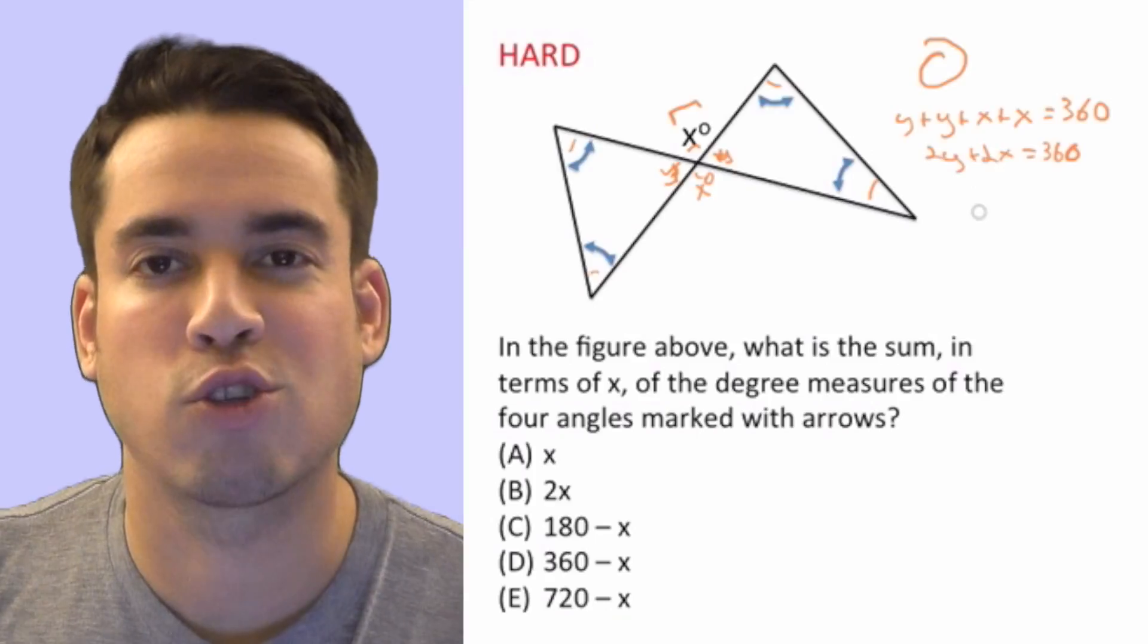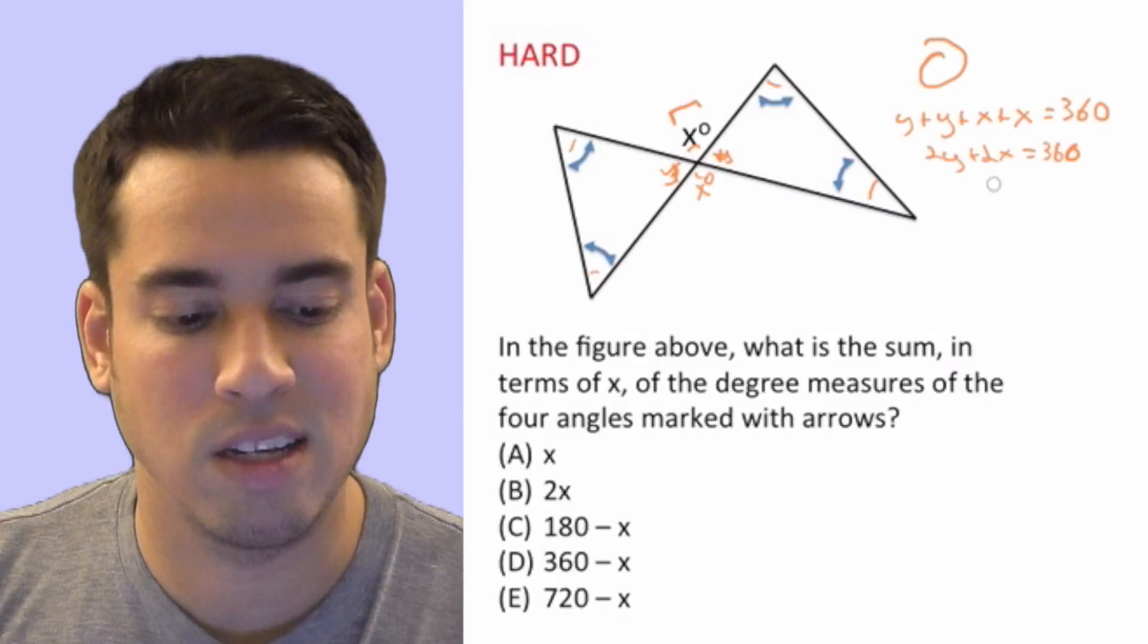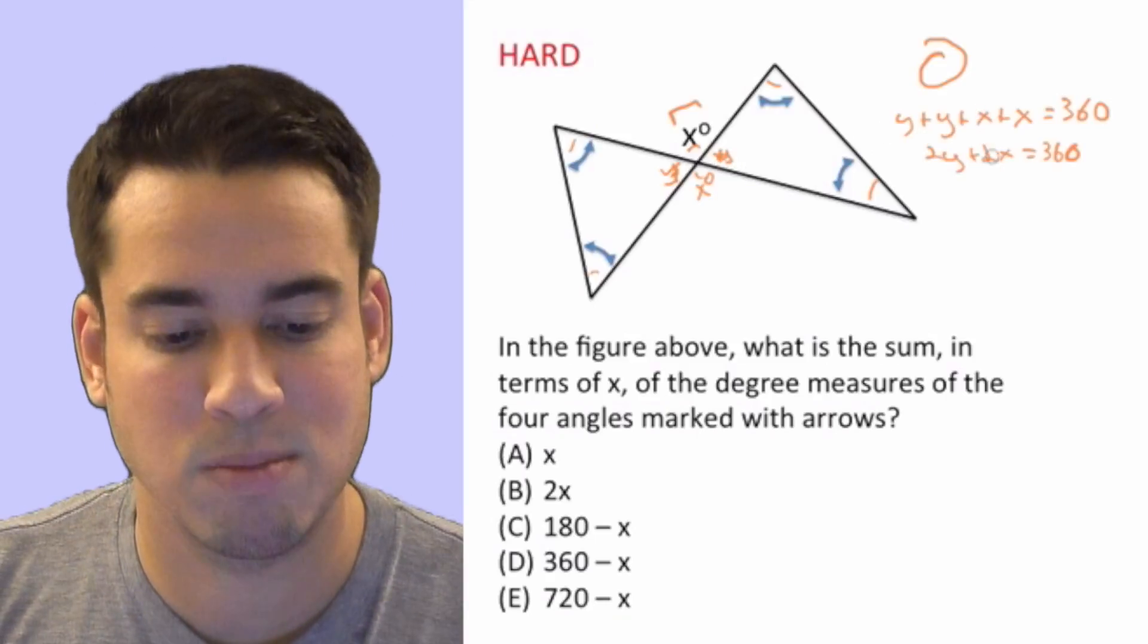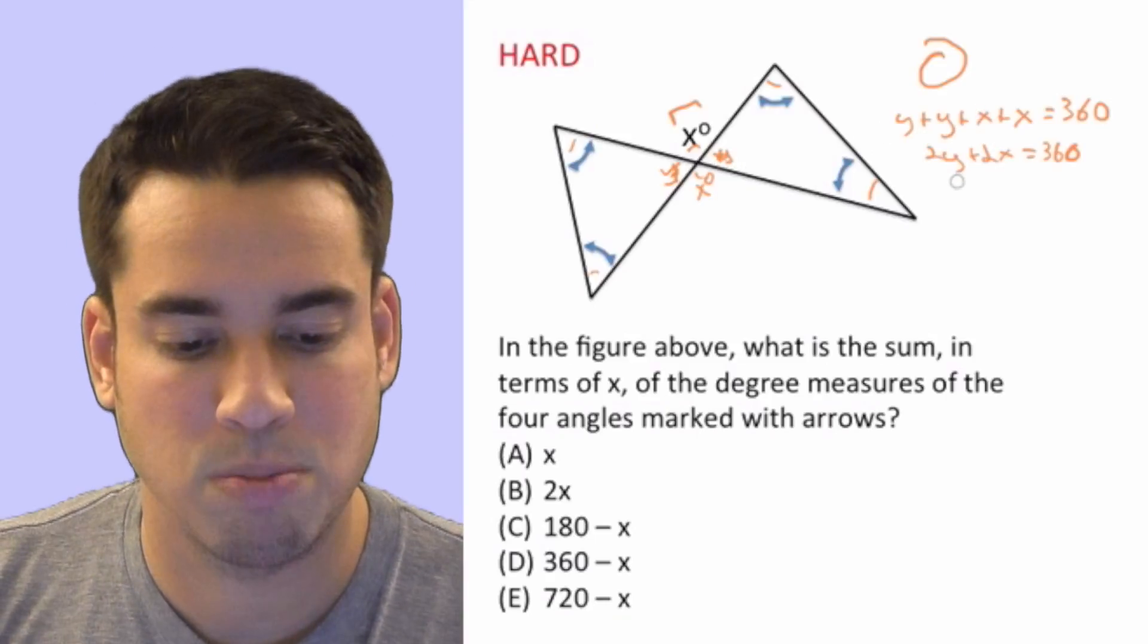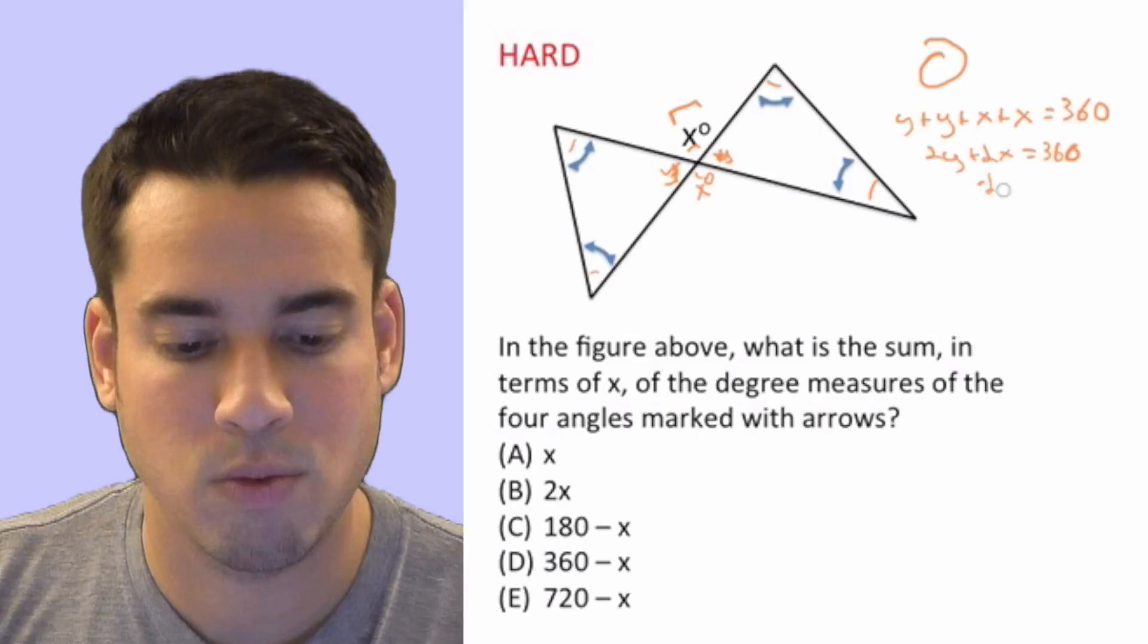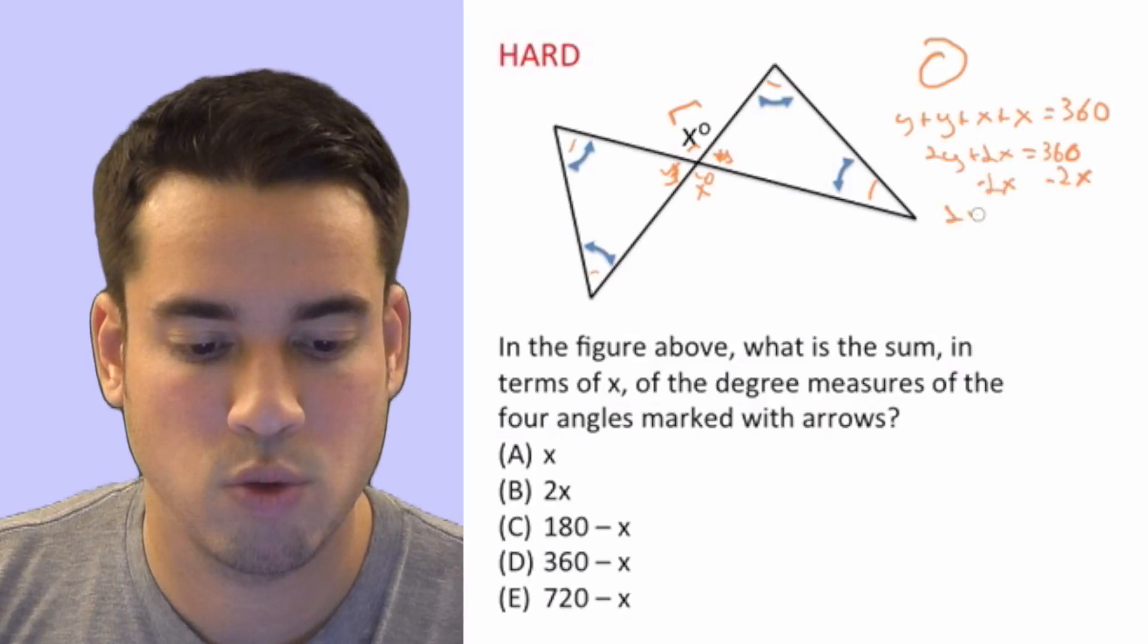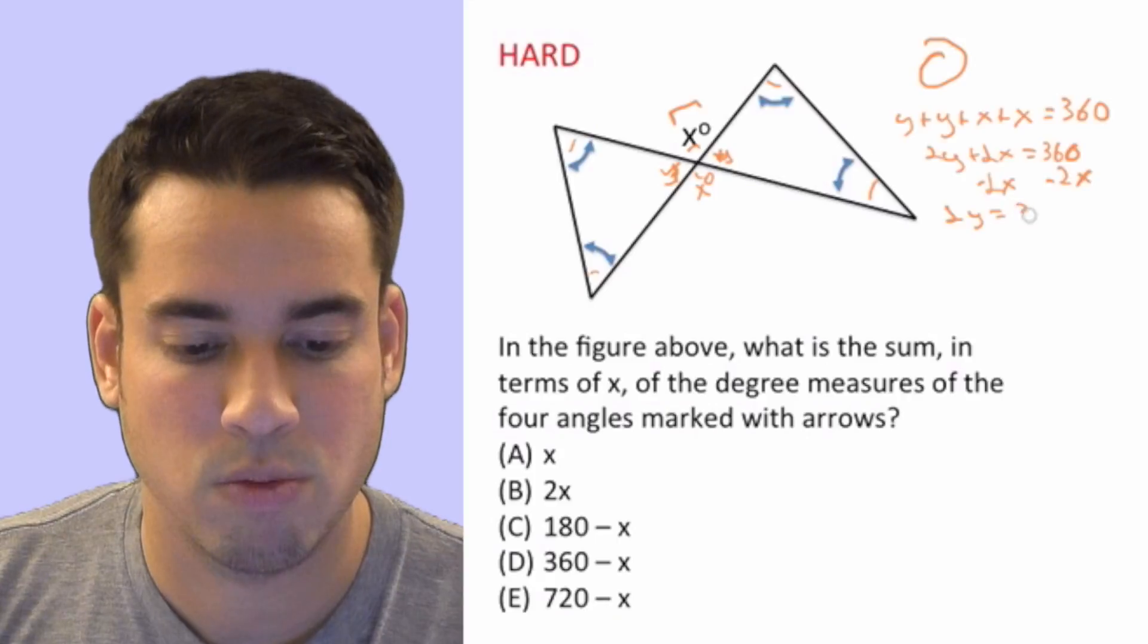We want to get this in terms of x. That y doesn't do us any good, so we're calling these angles y. Let's see if we can represent them in terms of x. We simply isolate y, get rid of the 2x, and now we have 2y equals 360 minus 2x.